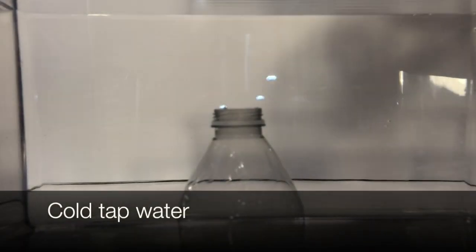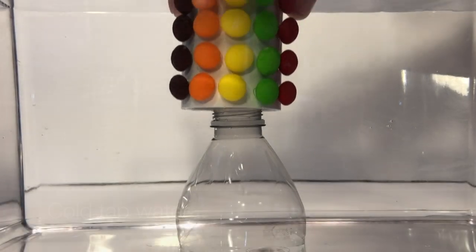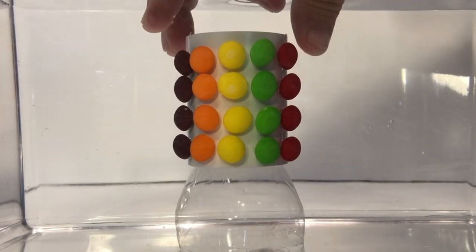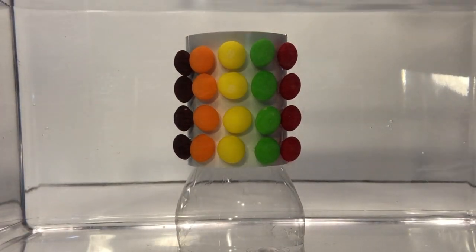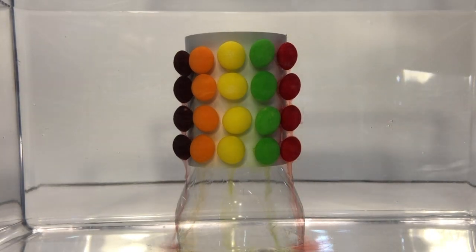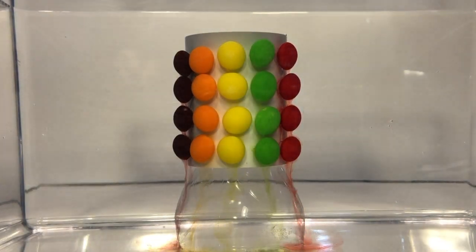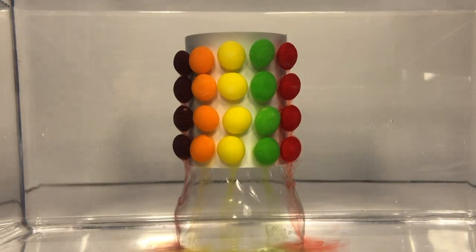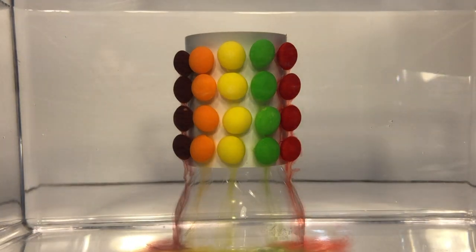This experiment is starting off with regular room temperature water. Take your Skittles and put it in the water and place it gently onto the cap or the control. You can see right away the water is starting to dissolve the Skittles, and therefore, kind of like what you did with the plate I did earlier,